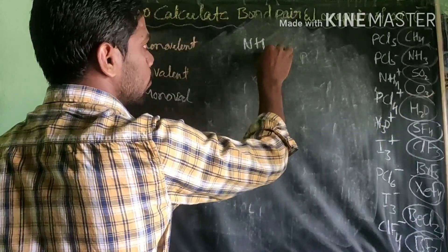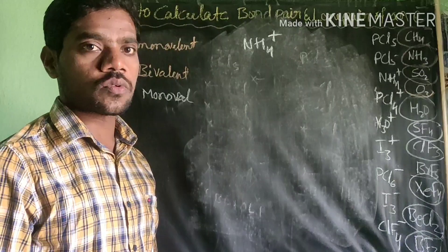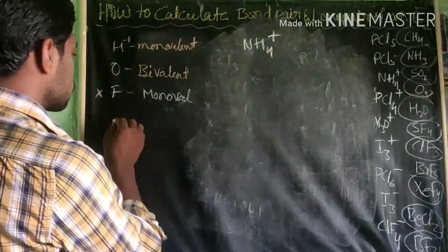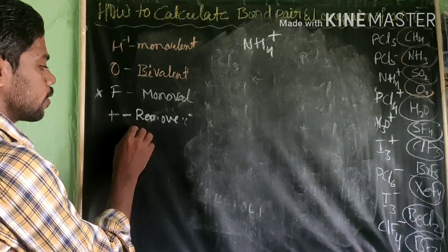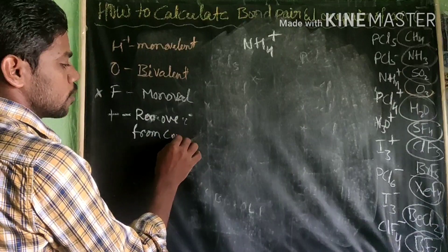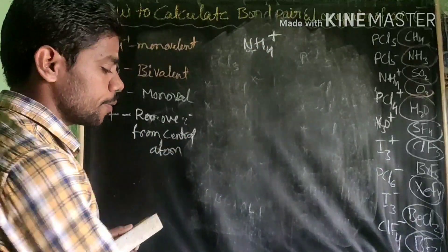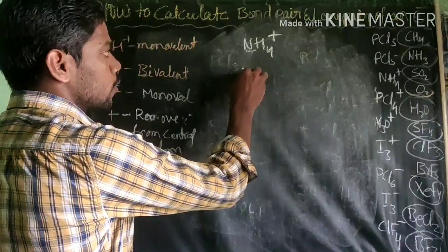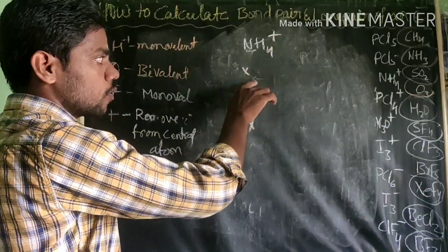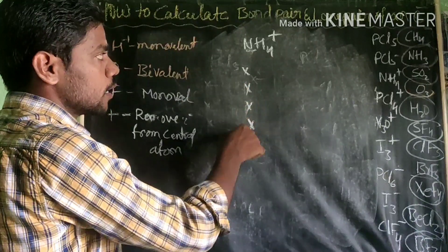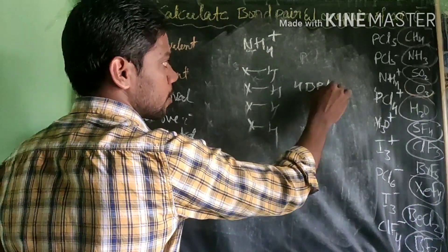For charged molecules, take ammonium ion NH4+. Whenever there is a positive charge, we must remove one electron from the central atom. Nitrogen is a 15th group element with 5 valence electrons. Remove 1 electron for the positive charge, leaving 4 electrons. With 4 hydrogens bonding, ammonium ion has 4 bond pairs and 0 lone pairs.